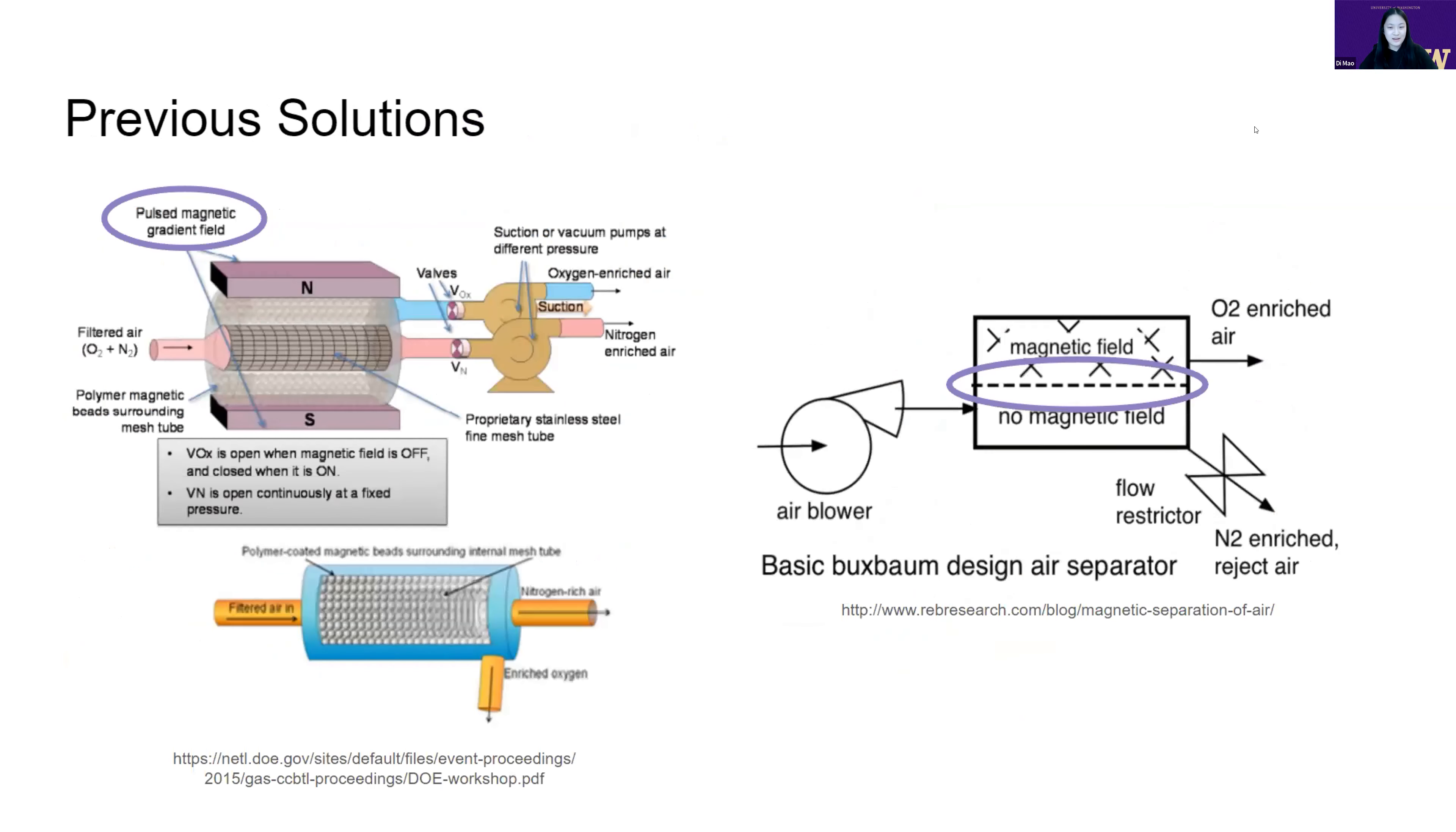Some previous solutions that already tackle this kind of similar idea are shown here. We want to pull special attention to what's circled in purple, specifically the magnetic gradient field and the membrane, because we'll be drawing upon those ideas in our own solution. There are also other methods available that extract oxygen from ambient air without the magnetism property, but those are more costly in energy and less compact, which is why we have focused more on our route.